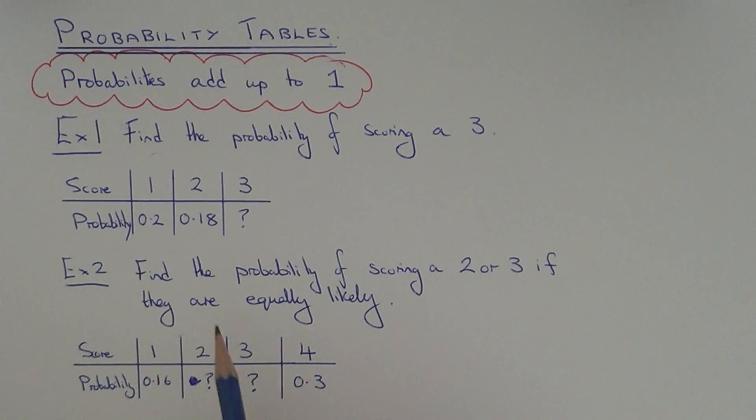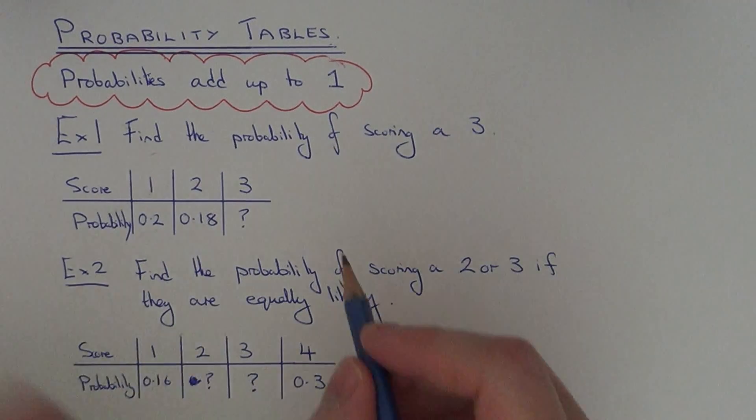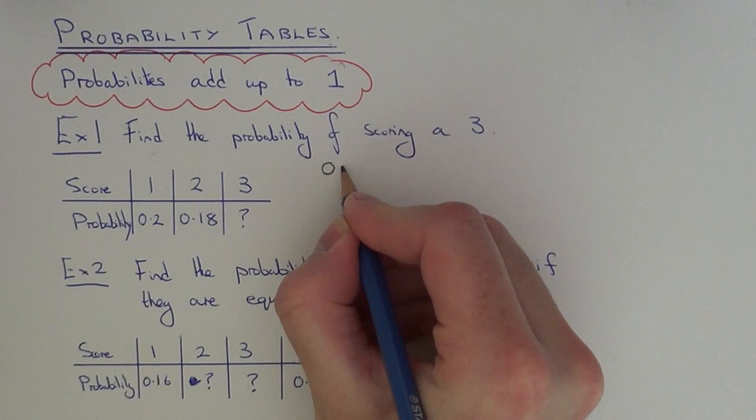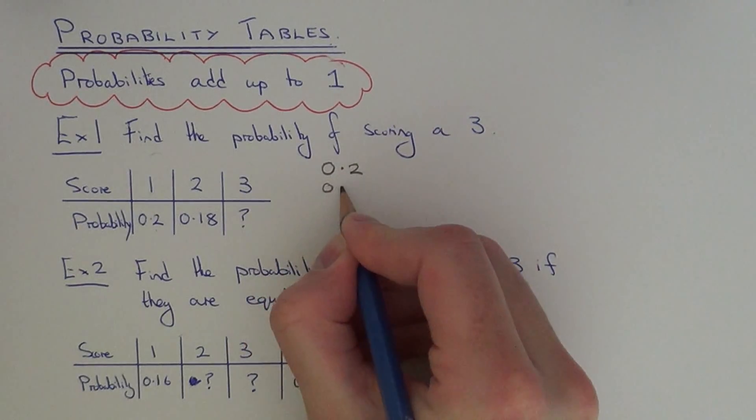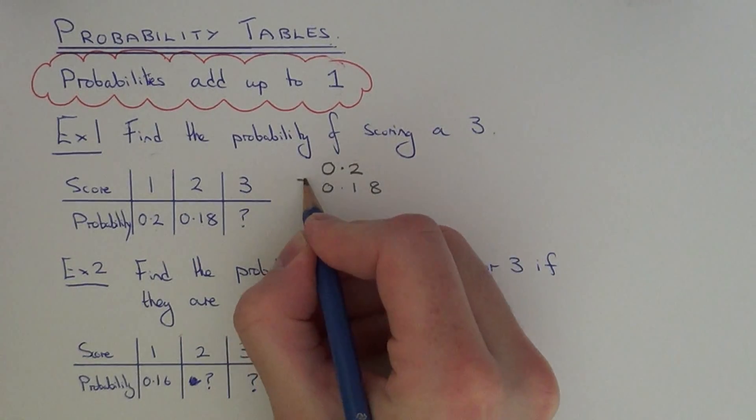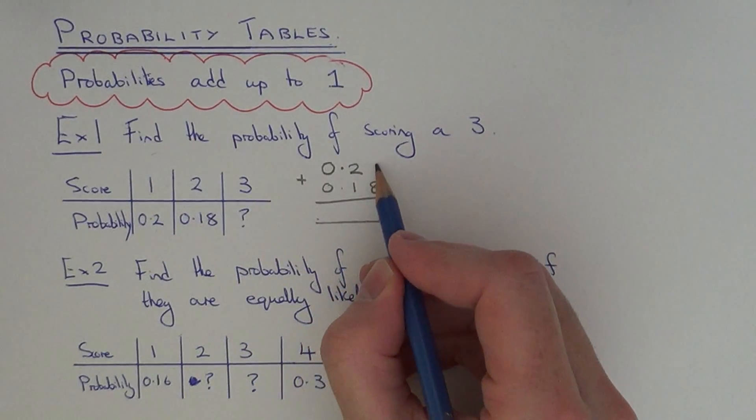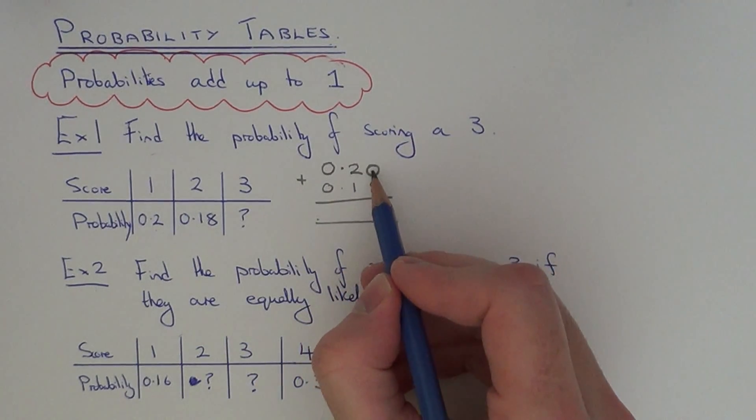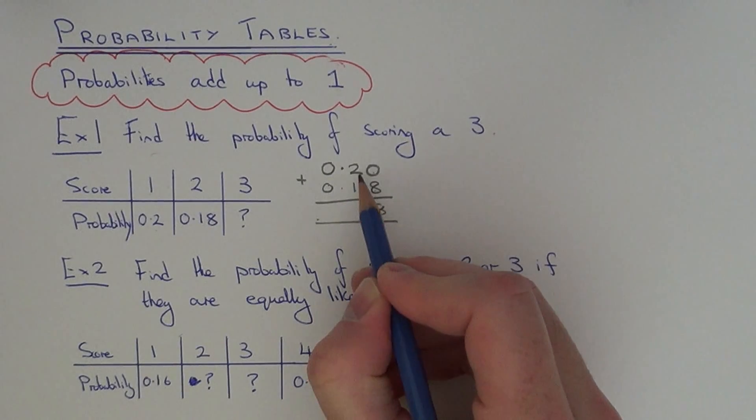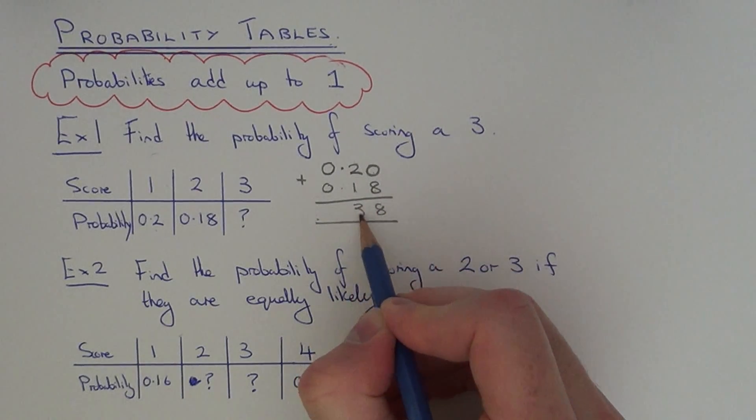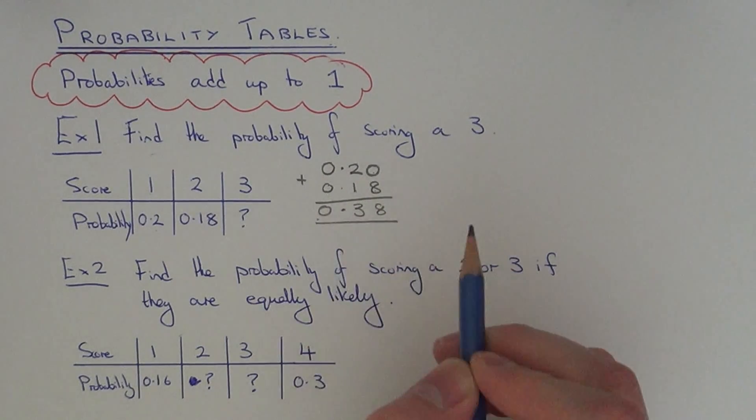So the first step is to add up the probabilities that we have in the table, so we've given the 0.2 and the 0.18. So let's add these up. You can fill in the 0 here to make things easier. So 0 add 8 is 8, 2 add 1 is 3, and we get 0.38.